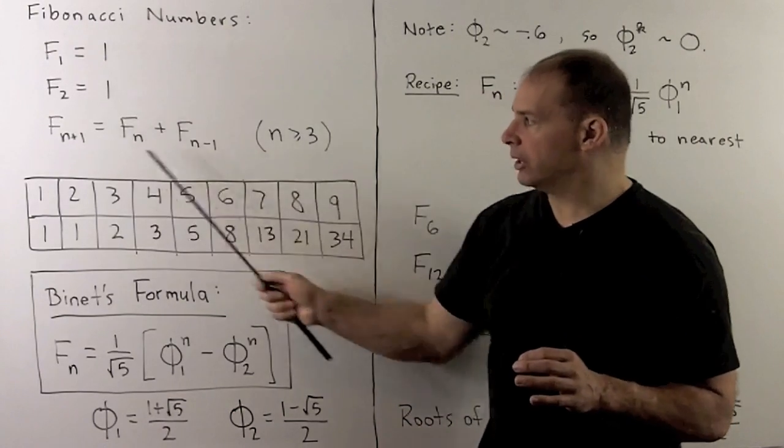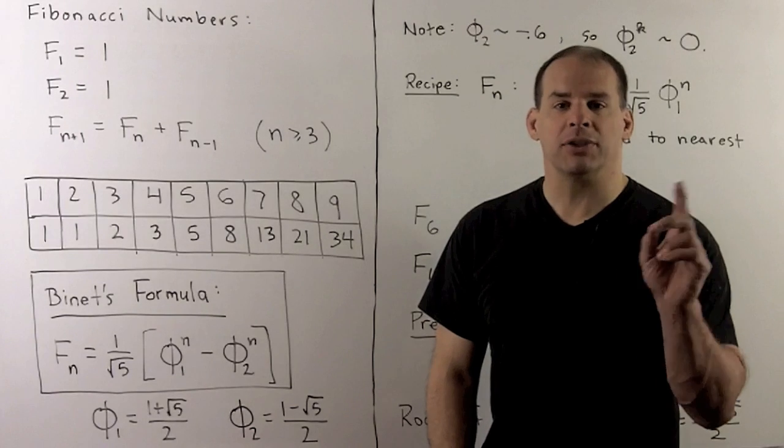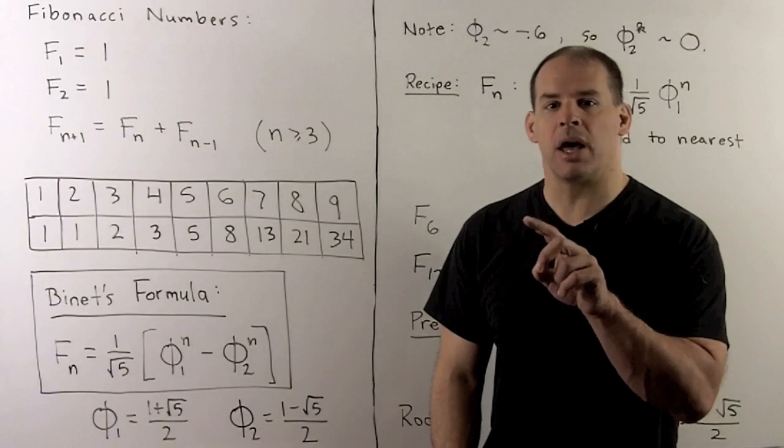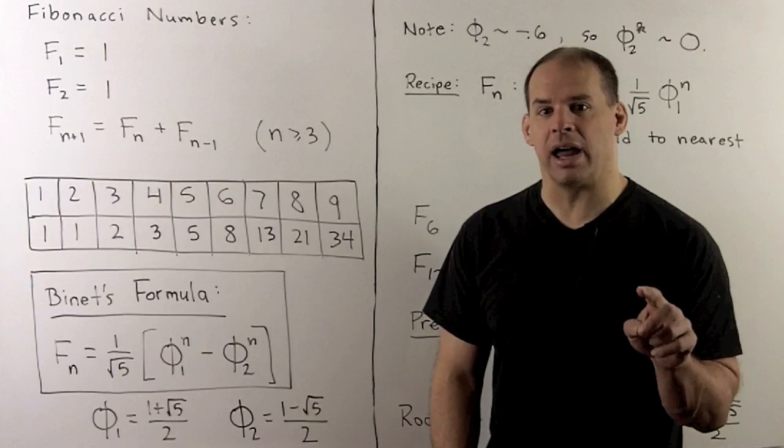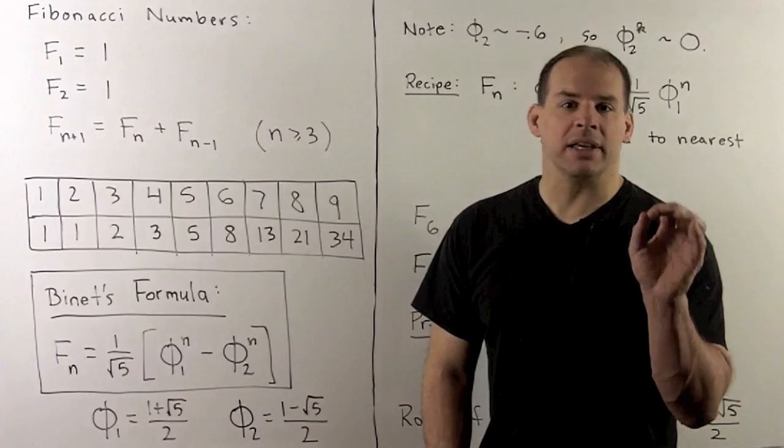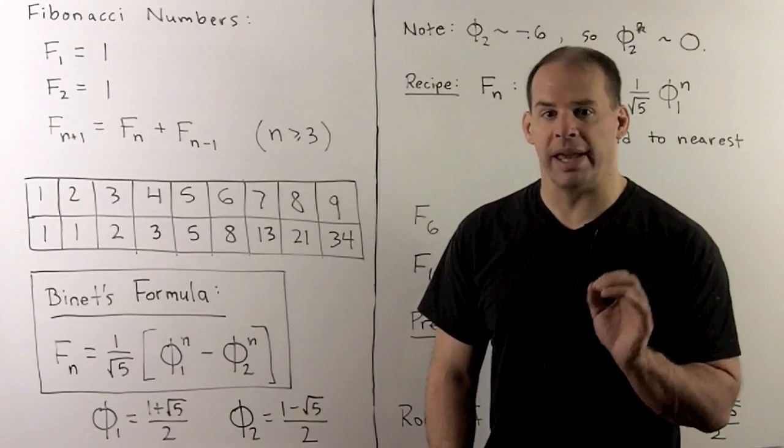Now, using this definition, you'll note, if I want the 100th Fibonacci number, I have to compute Fibonacci numbers 1 through 99, so I can take the sum of the 98th and the 99. Turns out, we have a formula that gets us directly to any Fibonacci number that we want. And this is called Binet's formula.